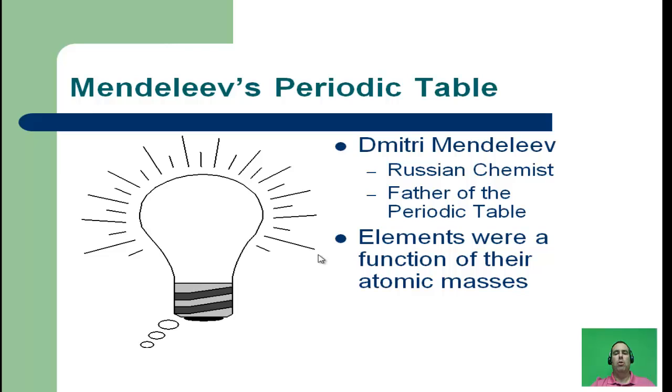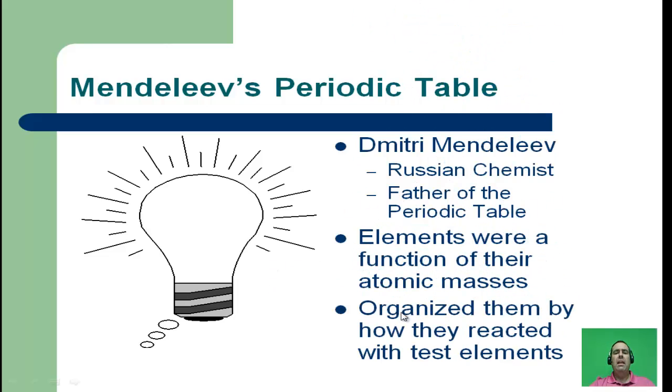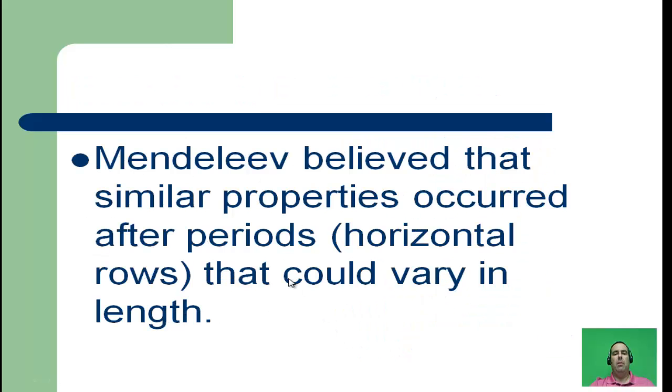At his time, there were about 48 to 60 elements that were known to man. What he did is he looked at a lot of the physical properties associated with those elements and the chemical properties associated with those elements also. And he began to group them according to things that looked alike and things that reacted alike. He organized them by how they reacted with some test elements.